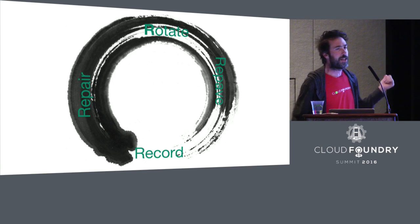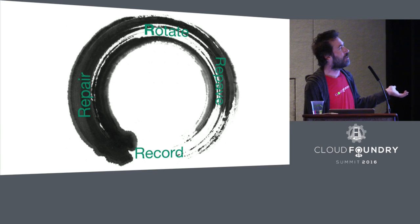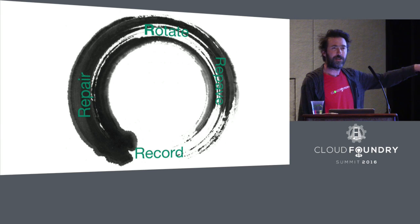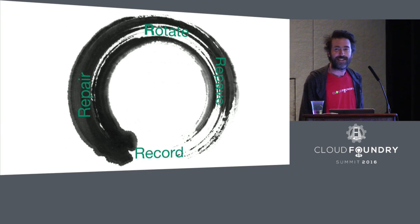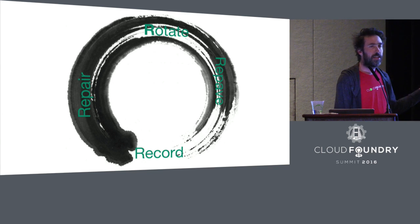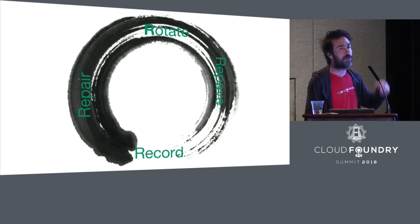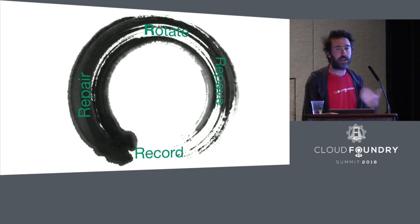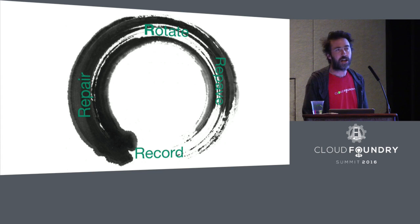Amazon also gives us some other features that allow us to quickly swap out all our keys using Amazon mechanisms. We can rotate those keys quickly, we can repave our whole thing and get new keys, and then we can record that in the Amazon CloudWatch log — send it out through your syslog server, whatever you guys want to do with that.